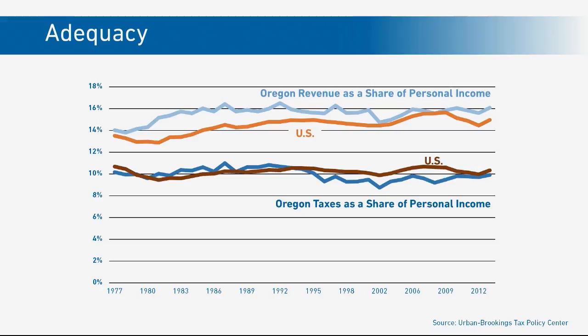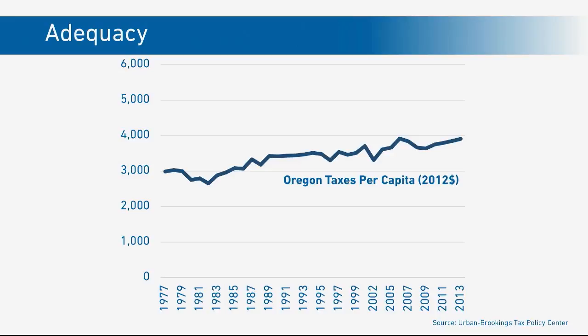Now I'm going to shift gears and talk about taxes per capita — the total amount of taxes divided by the population in the state. We started about $3,000 per capita in 1977, and by 2013 we were up to $3,900, adjusted for inflation. We've fallen behind the U.S. average. That's because our per capita income is below the U.S. average, meaning we have less economy to tax per person than the typical state, so our tax code put in different states would generate more money. That's the story on adequacy.